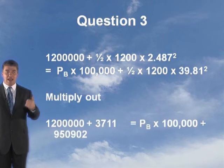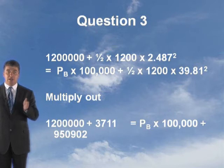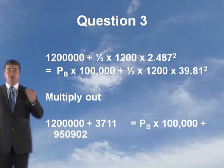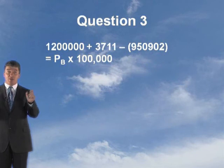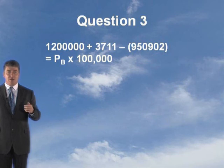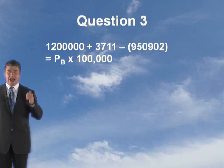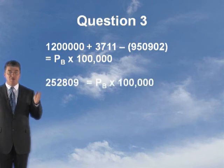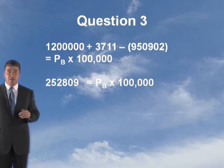You multiply that out, you get 1,200,000 plus 3,711 equals the pressure at B times 100,000 plus 950,902. Transpose again by cancelling out the 950,902 from both sides.